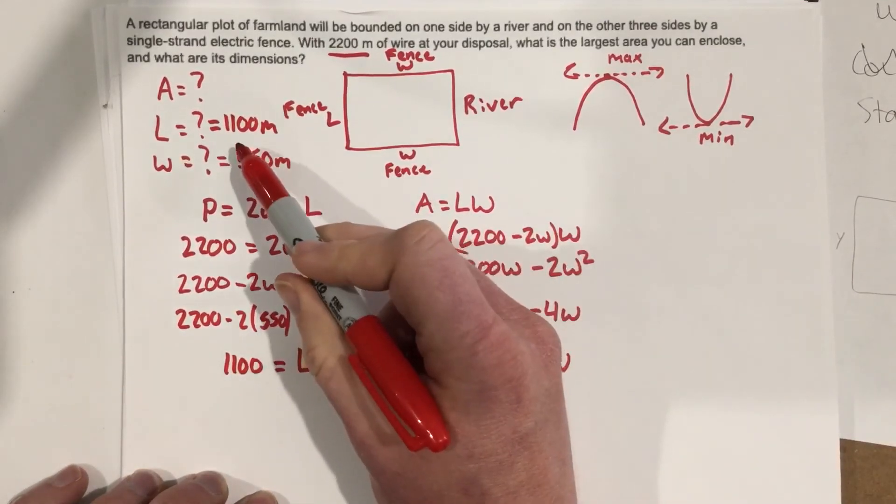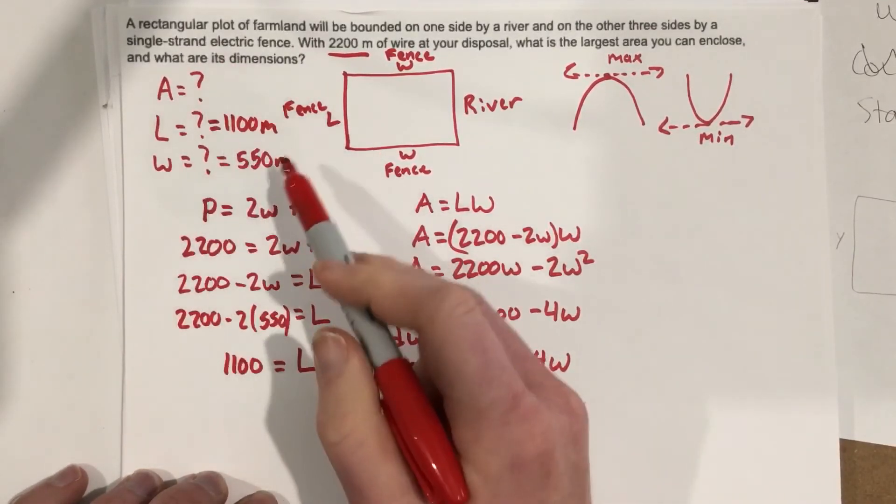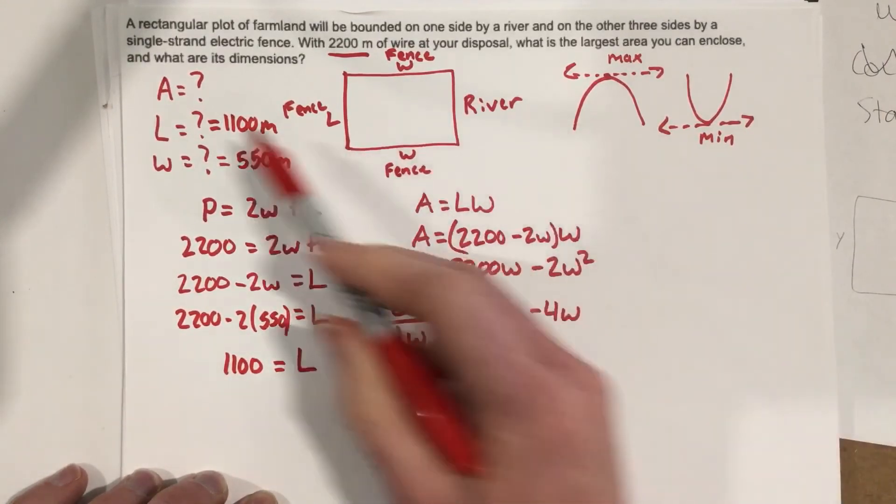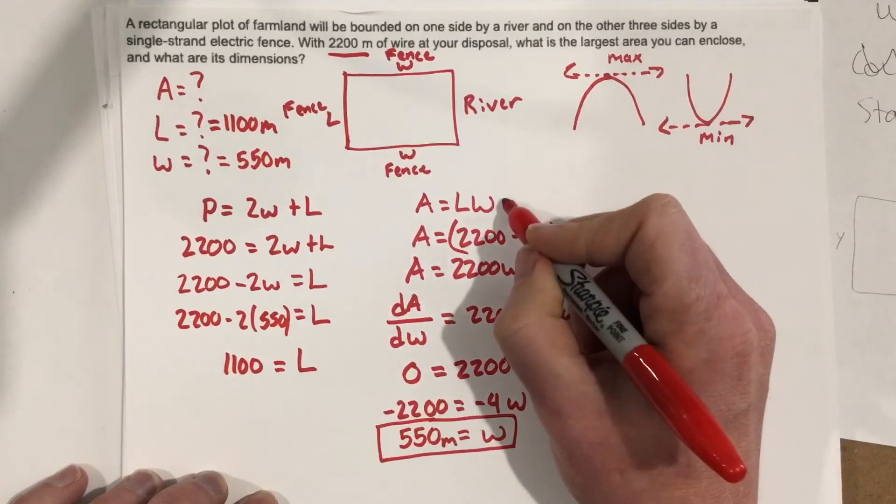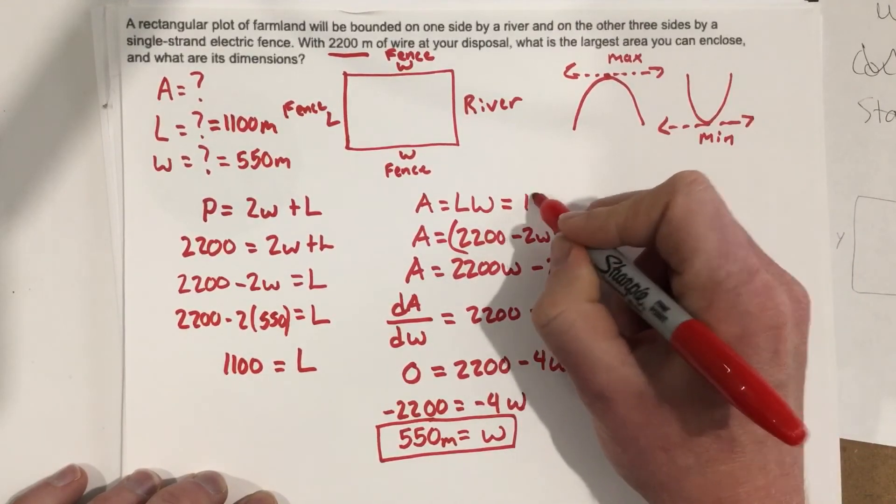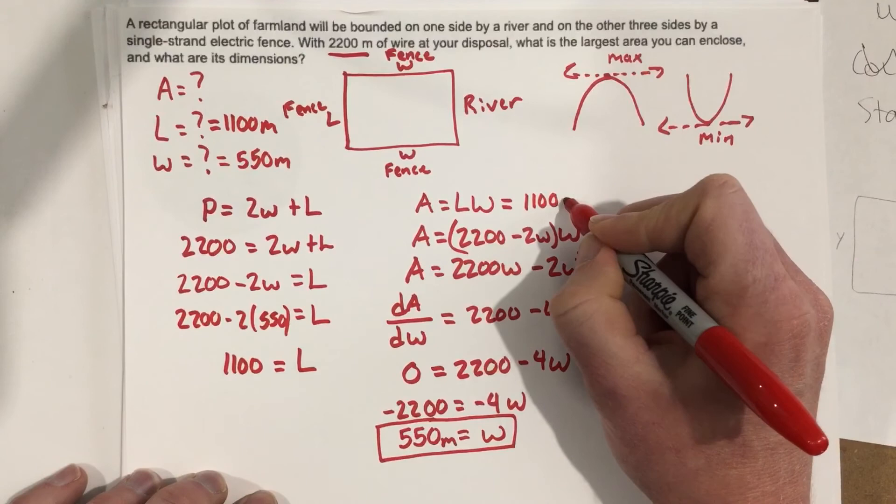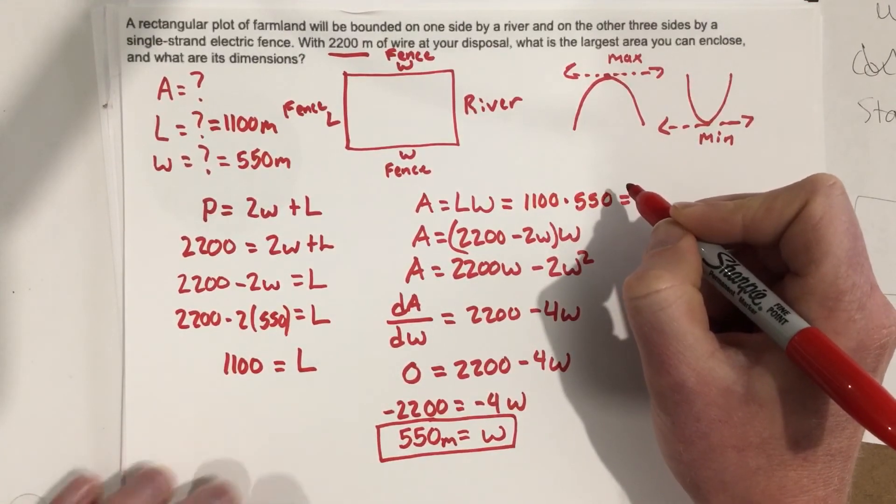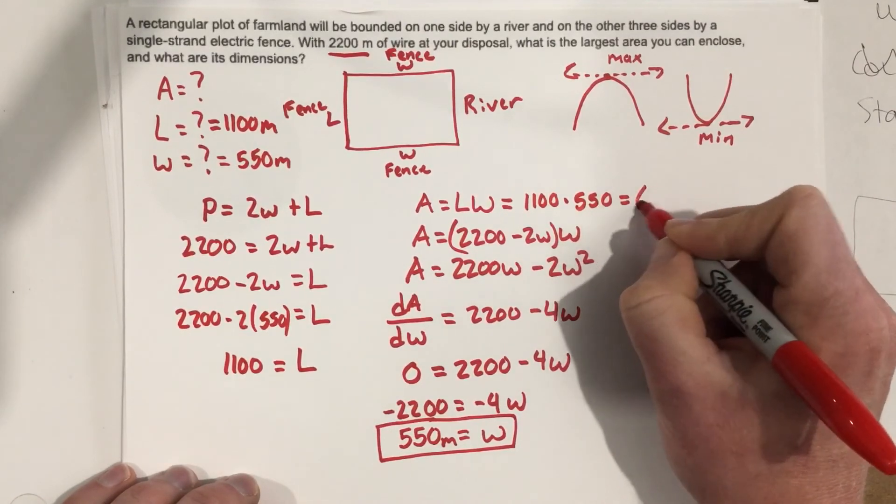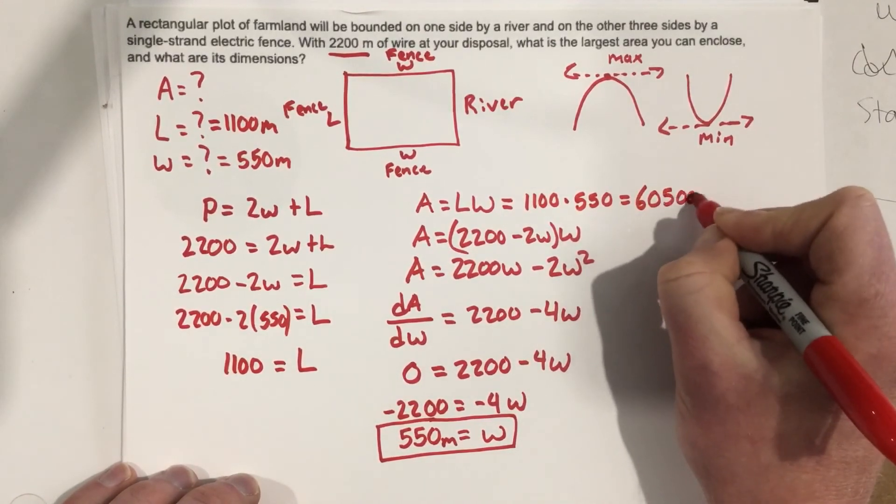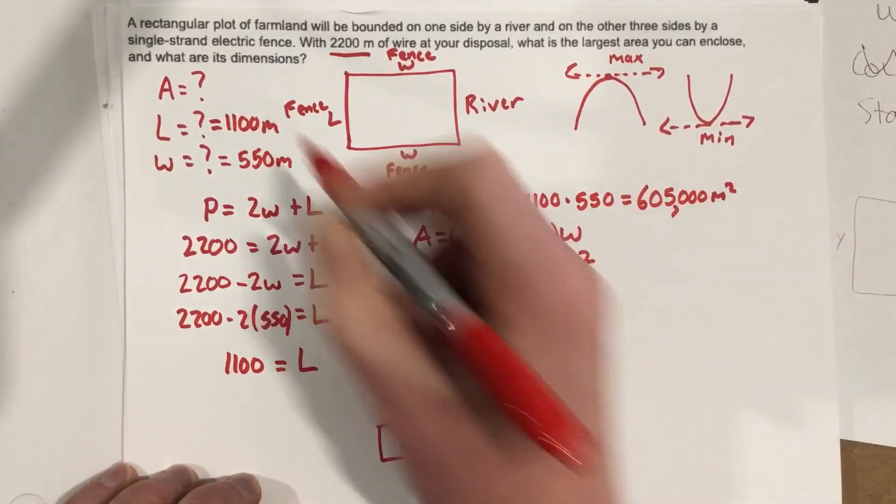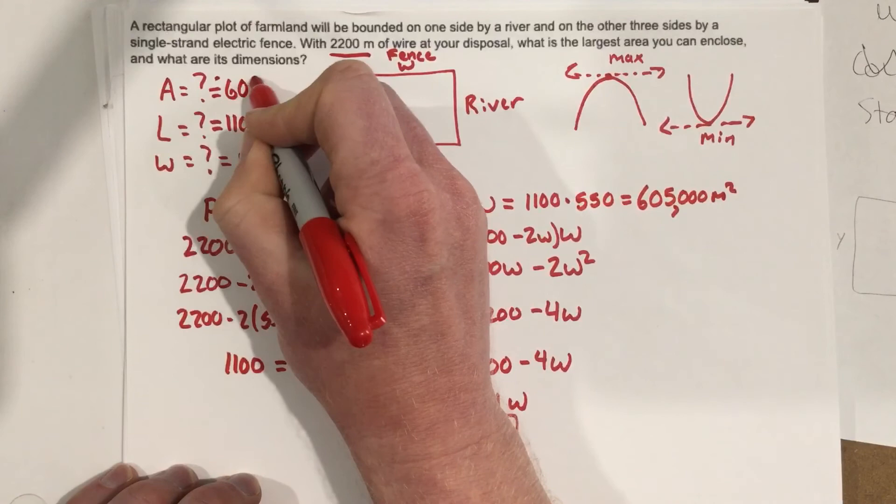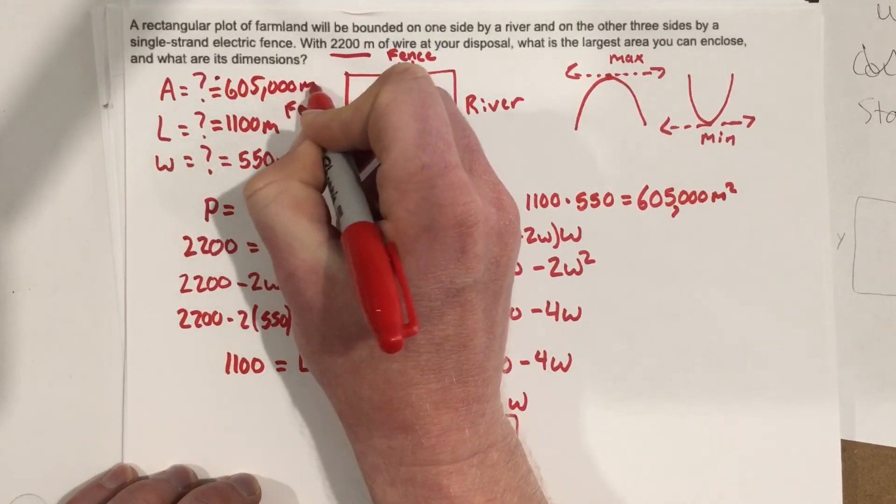So, now we know the width and the length, which is two of the dimensions they ask us for. Shorter dimension, longer dimension. And they want us to figure out the area. Well, we know the area is length times width. So, we're going to take 1100, and we're going to multiply it times 550. And that gives us 605,000 meters squared. So, this is equal to 605,000 meters squared.